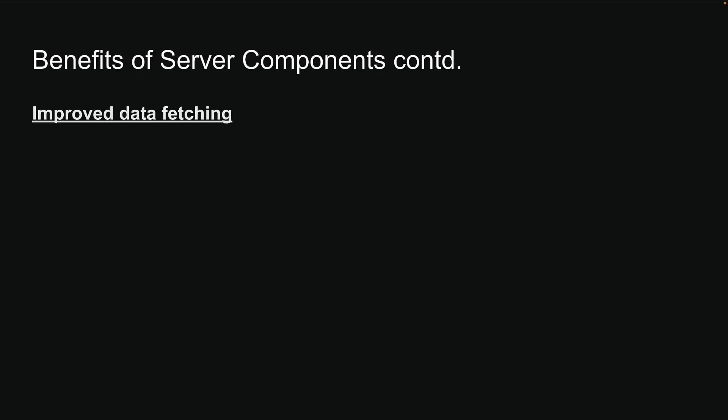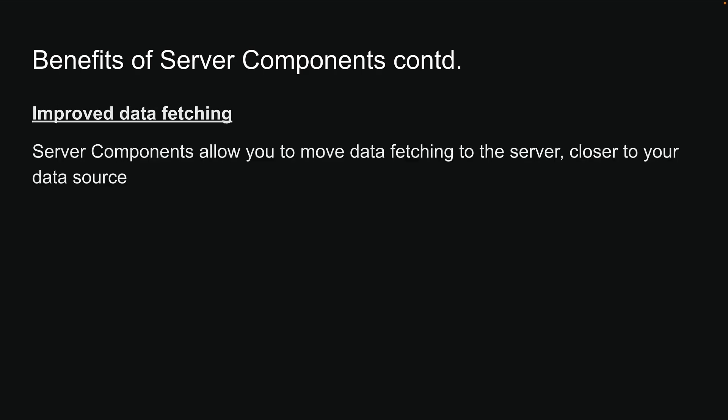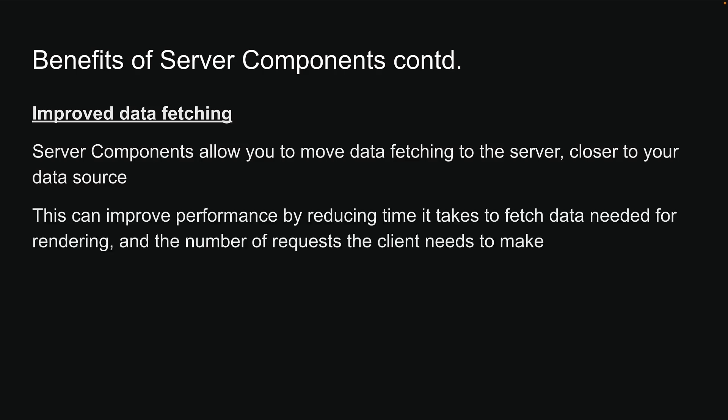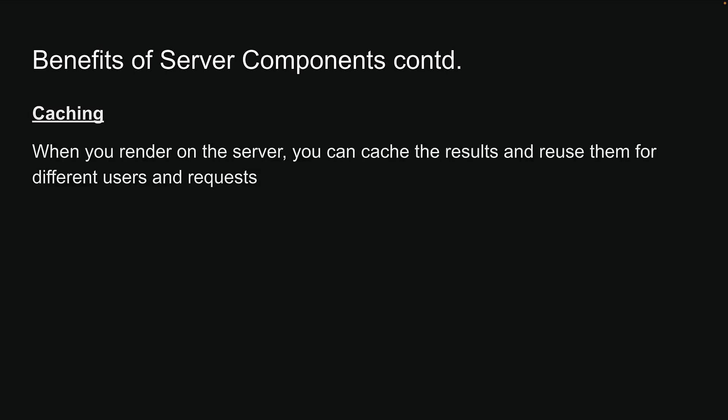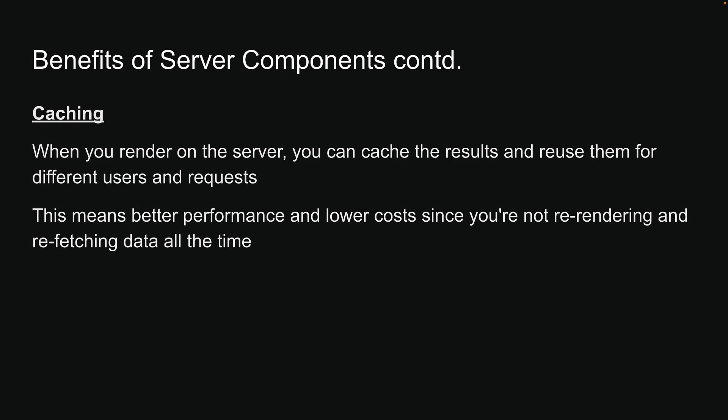Fourth, data fetching gets way smarter. Server components allow you to move data fetching to the server, closer to your data source. This can improve performance by reducing the time it takes to fetch data needed for rendering and the number of requests the client needs to make. Fifth, there is caching. When you render on the server, you can cache the results and reuse them for different users and requests. This means better performance and lower costs, since you're not re-rendering and refetching data all the time.